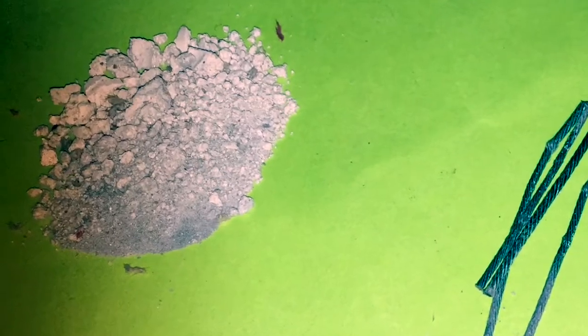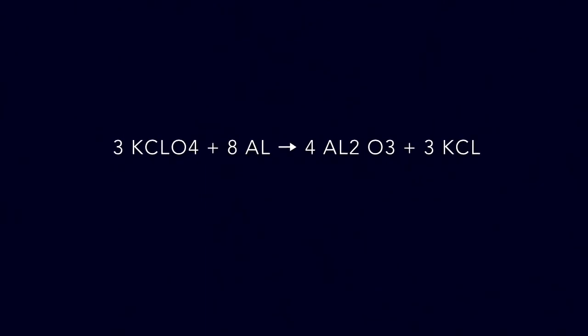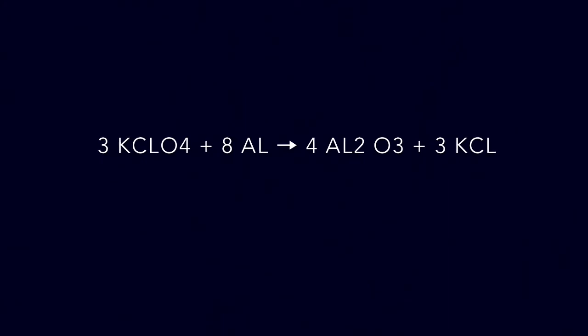Flash powder is inside the firecracker and when lit it causes the firecracker to explode. Flash powder is made up of three atoms of potassium perchlorate and eight atoms of aluminum. When combustion occurs it produces four atoms of aluminum oxide and three atoms of potassium chloride.